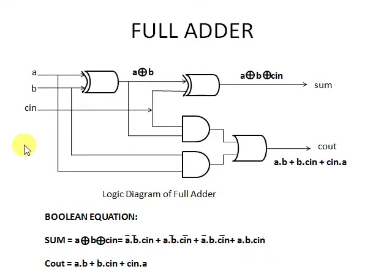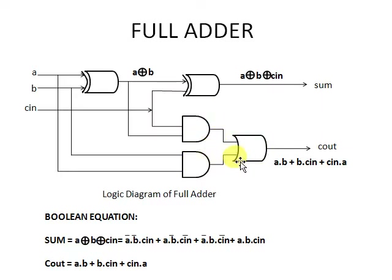This is the full adder logic diagram using A, B, and C-in as the three inputs. Two XOR gates — XR1 and XR2 — are used. XR2 produces the overall sum: A XOR B XOR C-in. Two AND gates are used, and their outputs are added in an OR gate, producing AB + BC-in + C-in·A.